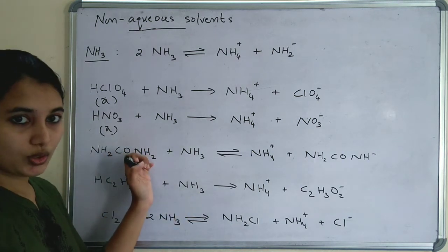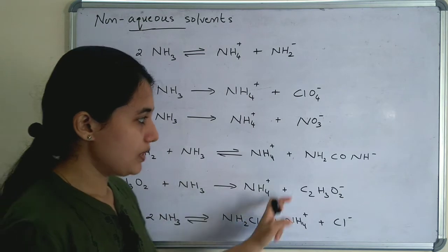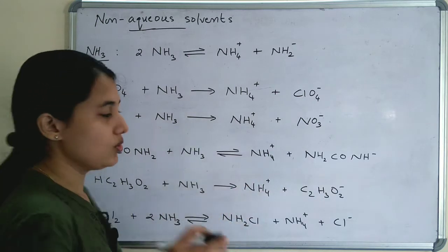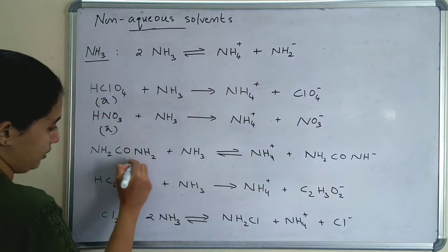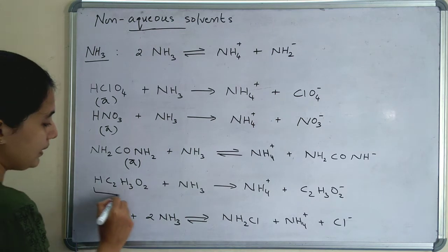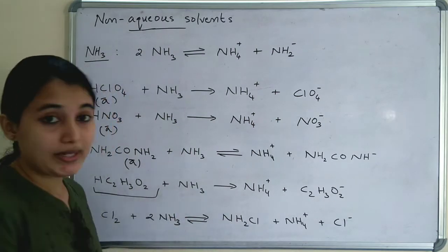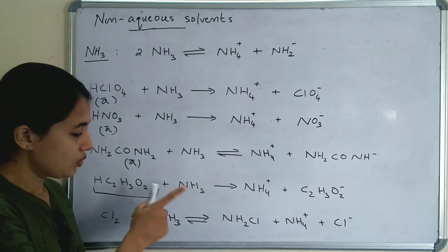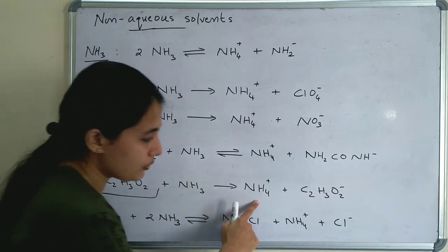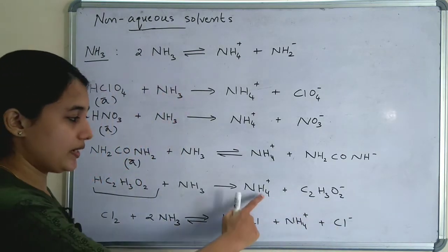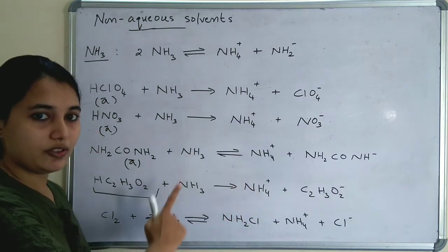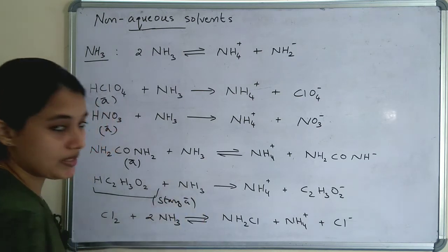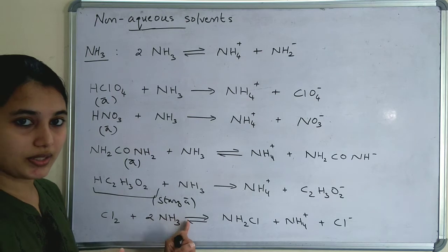Urea (NH2CONH2) + NH3 → NH4⁺ + NH2CONH2⁻. NH4⁺ is obtained, so urea is also an acid in ammonia. HClO2 is a weak acid in water, but in ammonia it gives NH4⁺ and CH3COO⁻, making it a strong acid in ammonia.